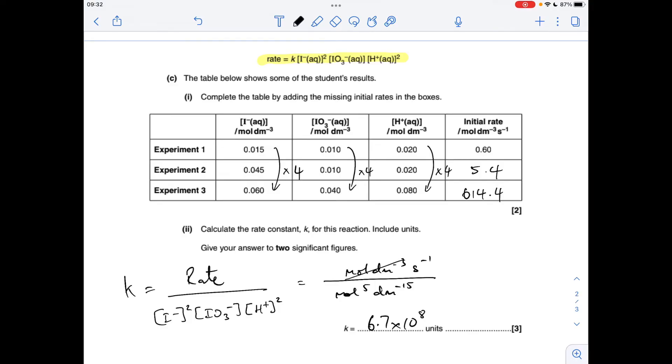So the moles per decimeter cubed on the top disappears. The mole to the 5 is going to drop to mole to the 4, and the dm to the minus 15 is going to drop to dm to the minus 12. And then all we do is take the denominator terms up to the top and flip their signs. So that's coming out at dm to the 12, mole to the minus 4, seconds to the minus 1. So well done if you got that bit right.